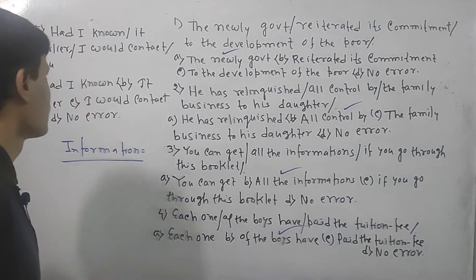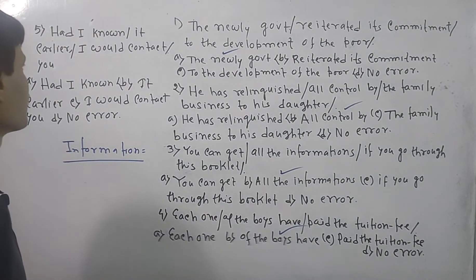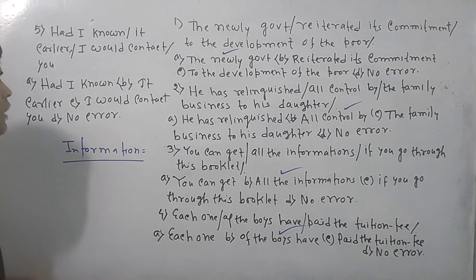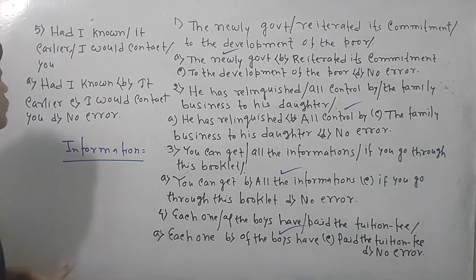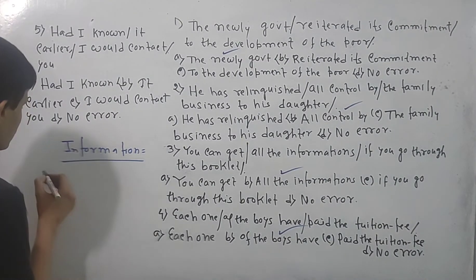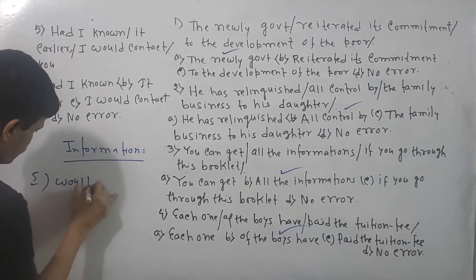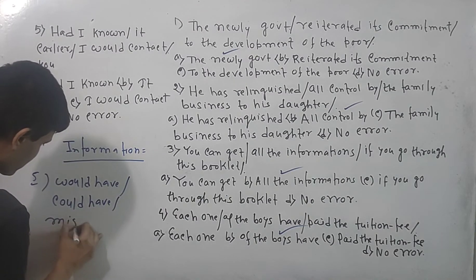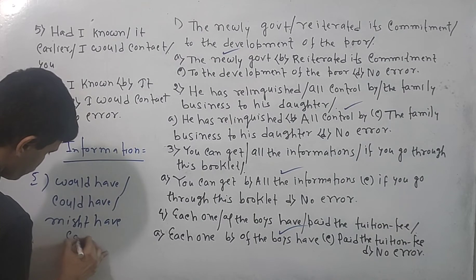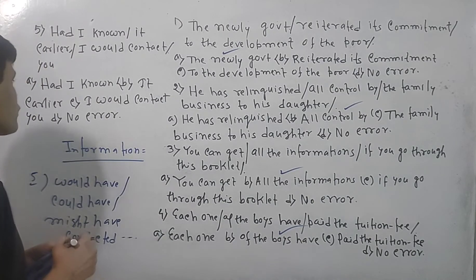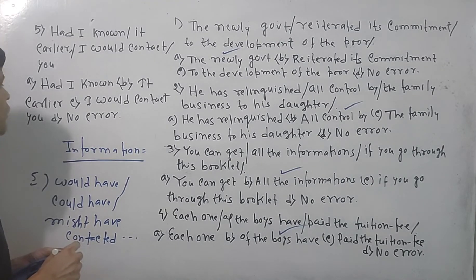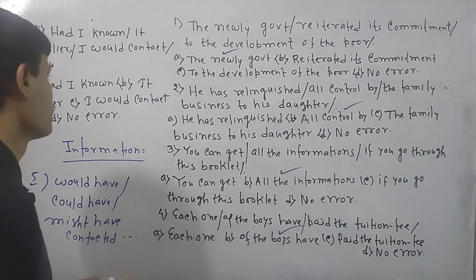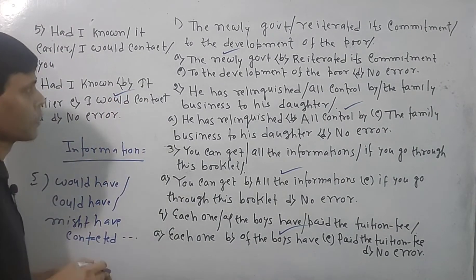Next question: 'Had I known it earlier, I would contact you.' Options: 'had I known it earlier,' 'I would contact you,' or 'no error.' Whenever we use a fictitious or conditional sentence like 'had I known,' the structure should be: 'would have,' 'could have,' or 'might have' followed by 'contacted.' Here 'have' is missing. There is no mistake in 'had I known' or 'it earlier.' The mistake lies in option B — it should be 'I would have contacted you.'